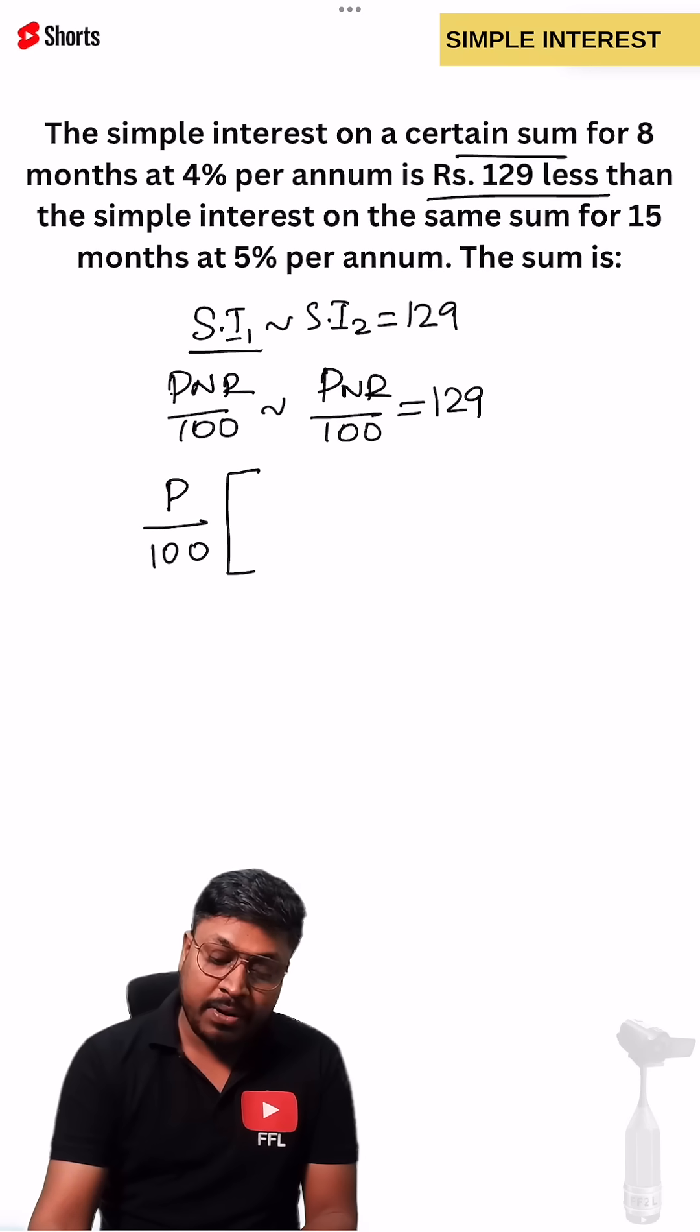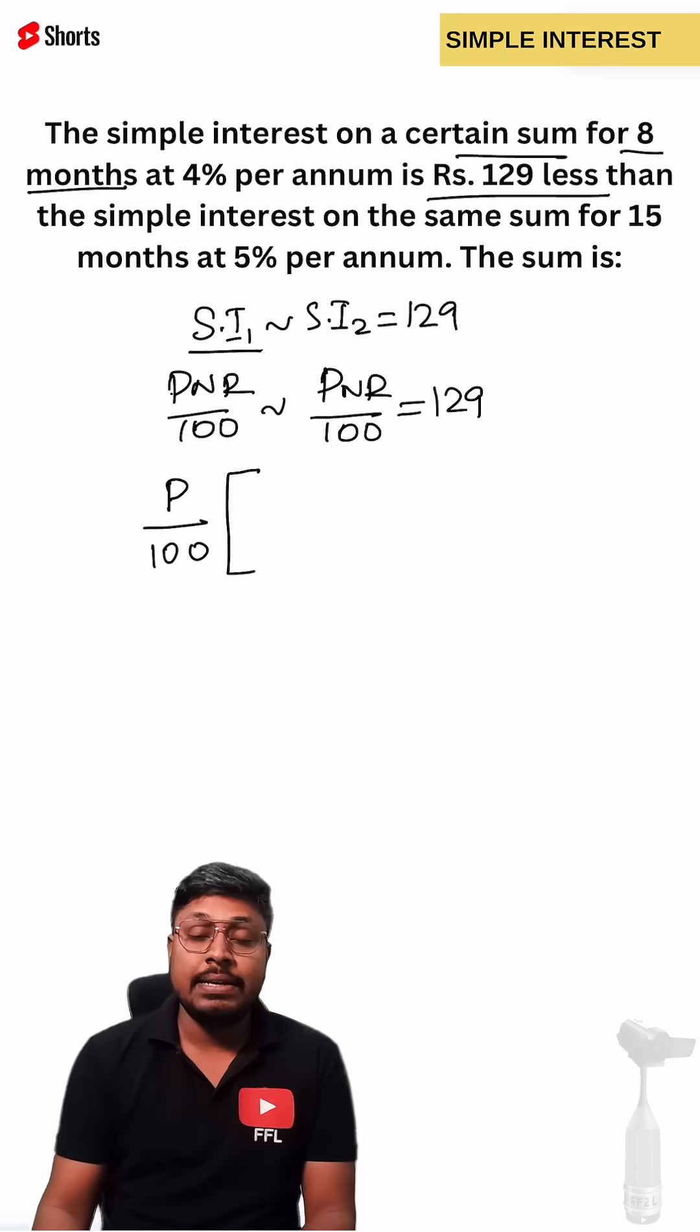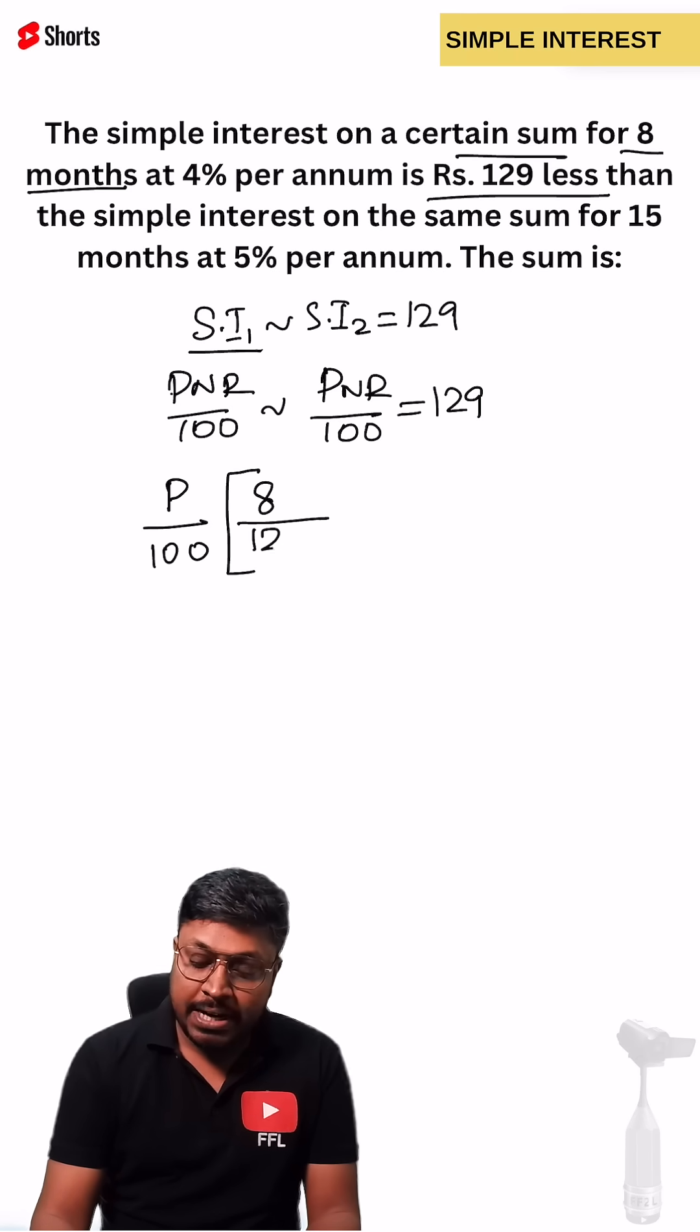So now NR, number of years. According to the question they have given in terms of 8 months, so we have to convert in terms of years: 8 by 12. This can be written as 8 divided by 12.